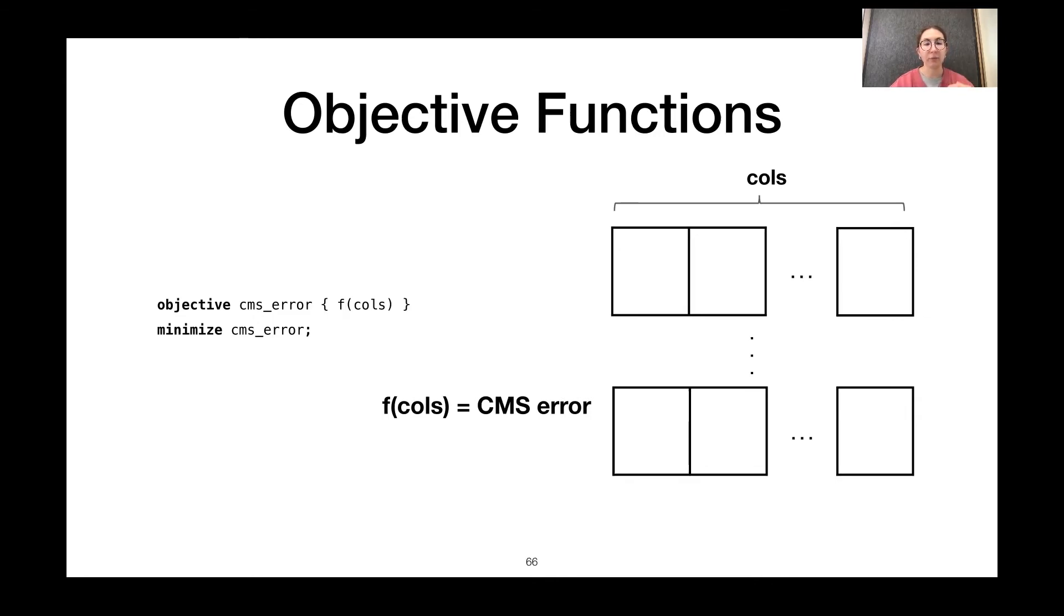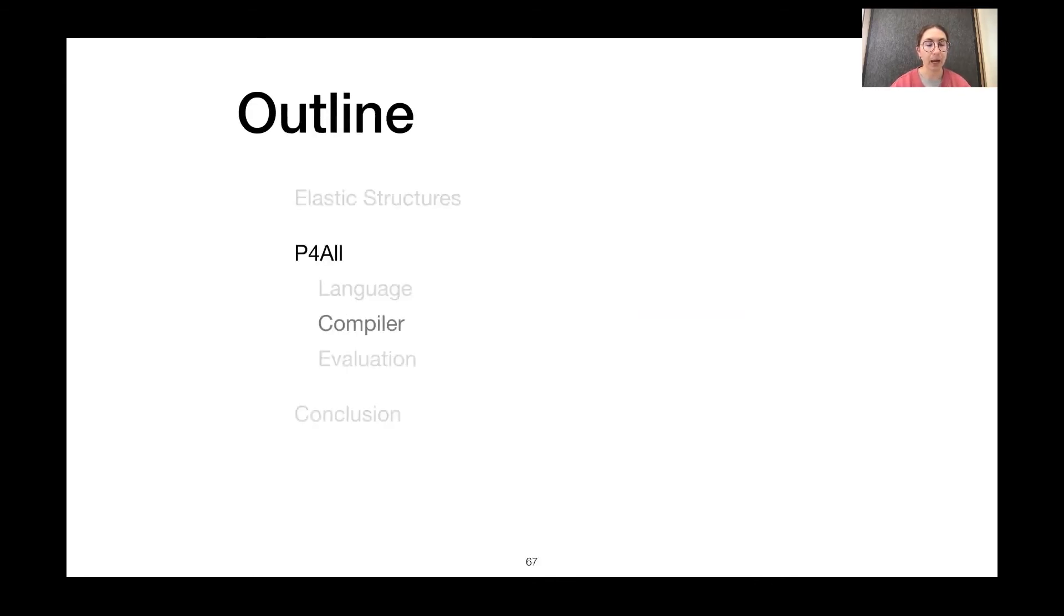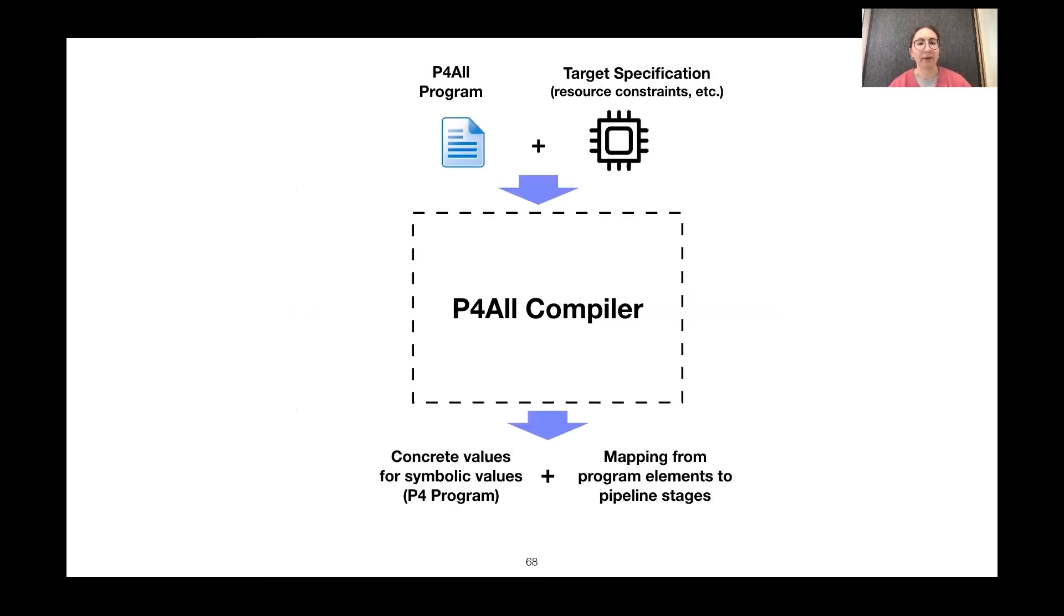So, now that we've written these elastic data structures, how do we actually optimize them? Our P4All compiler takes as input a P4All program and a target specification. This includes the resource constraints of the switch. The compiler then outputs concrete values for each of these symbolic values, which can be used to construct just a regular P4 program. And it outputs a mapping from program elements to pipeline stages.